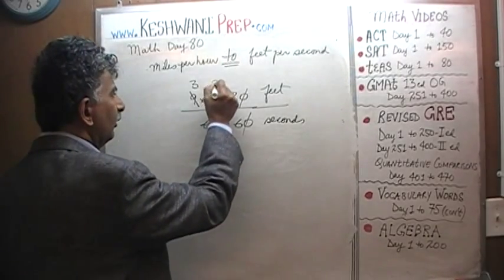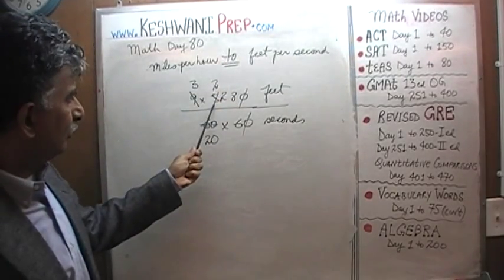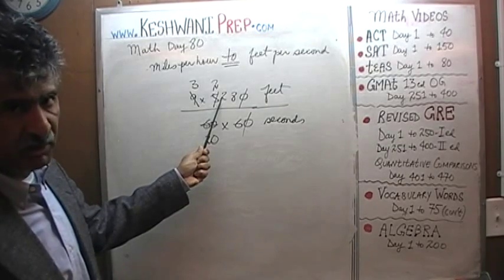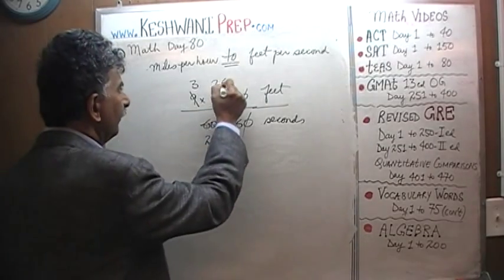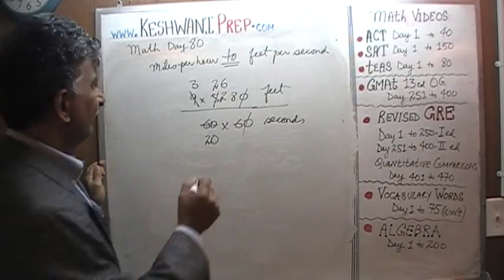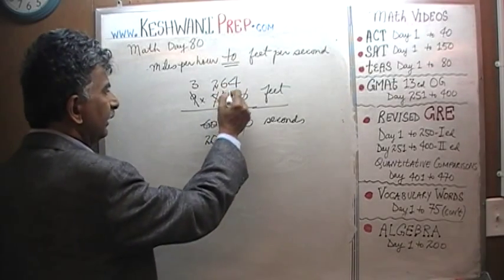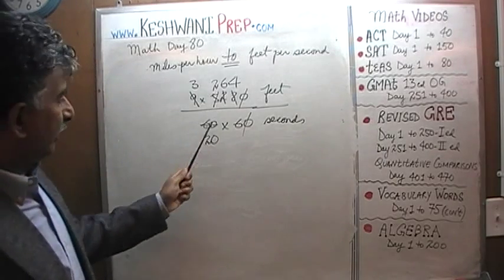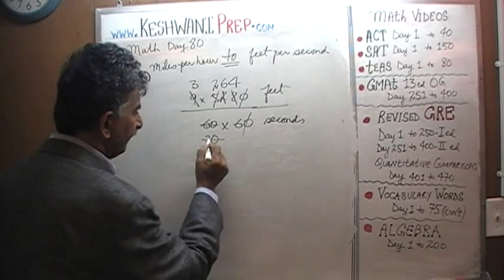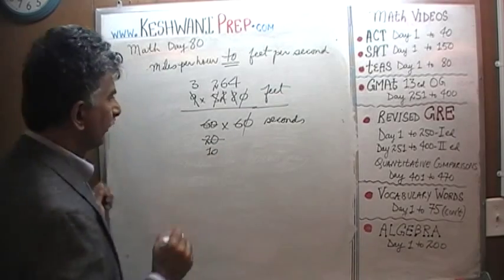5 has two 2s - the remaining 1 goes and joins the 2, becomes 12. 12 has six 2s, and 8 has four 2s. Since we divided the top by 2, we have to divide the bottom by 2, which means this 20 becomes 10. Leave it alone.